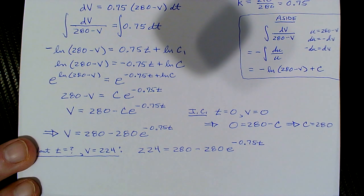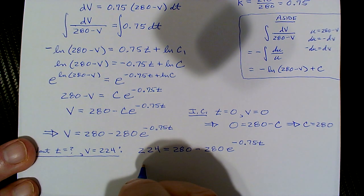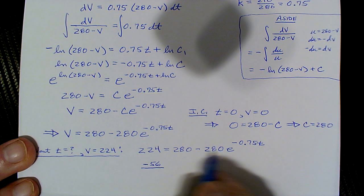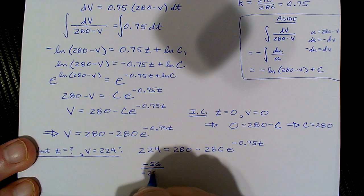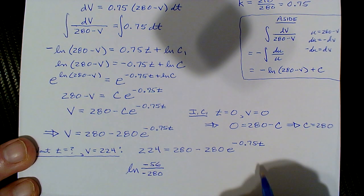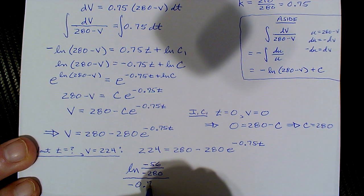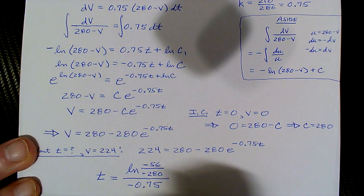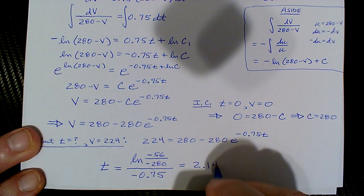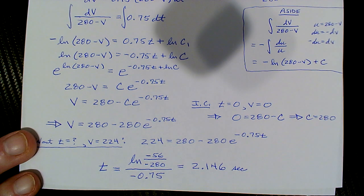To solve for t: subtract 280 to get 224 - 280 = -56. Divide by -280 to isolate e, then take the natural log, and divide by -0.75 to get t. That gives t ≈ 2.146 seconds.